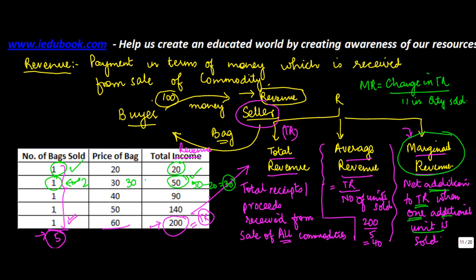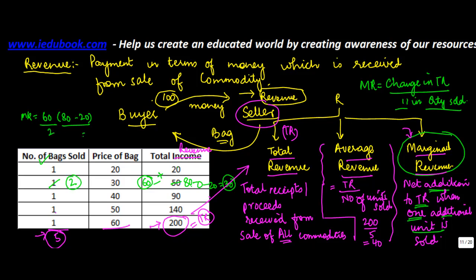Let's say instead of one unit, I sold two units at 30 rupees each, so the revenue from those two units would be 60, and the total revenue would be 60 plus 20, which is 80. To calculate marginal revenue: change in total revenue is 80 minus 20, which is 60, divided by change in quantity sold, which is 2 — giving you 30. That's how you compute these three kinds of revenues.